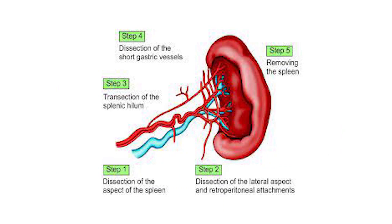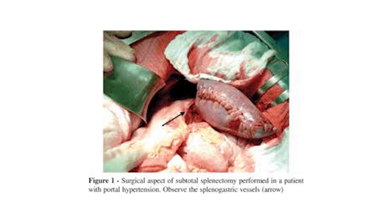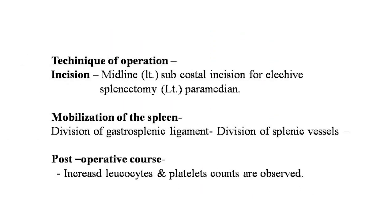The steps of splenectomy are: first, dissection of the aspect of the spleen; second, dissection of the lateral aspects and retroperitoneal attachments; third, transection of the splenic hilum; fourth, dissection of the short gastric vessels; and fifth, removing the spleen. Incision should be made on the midline or left subcostal incision for elective splenectomy, and left paramedian incision may also be taken.